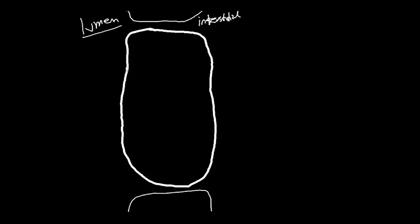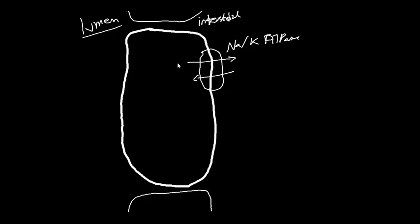On the interstitial side we have the sodium-potassium ATPase. What it's going to do is actively secrete sodium into the interstitial space, actively pump potassium back into the cell, and this requires ATP in the process.